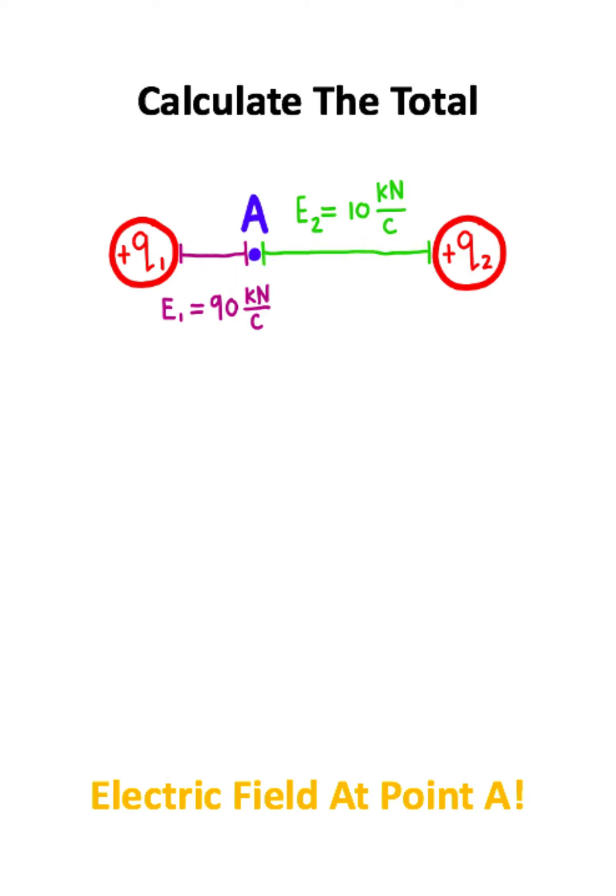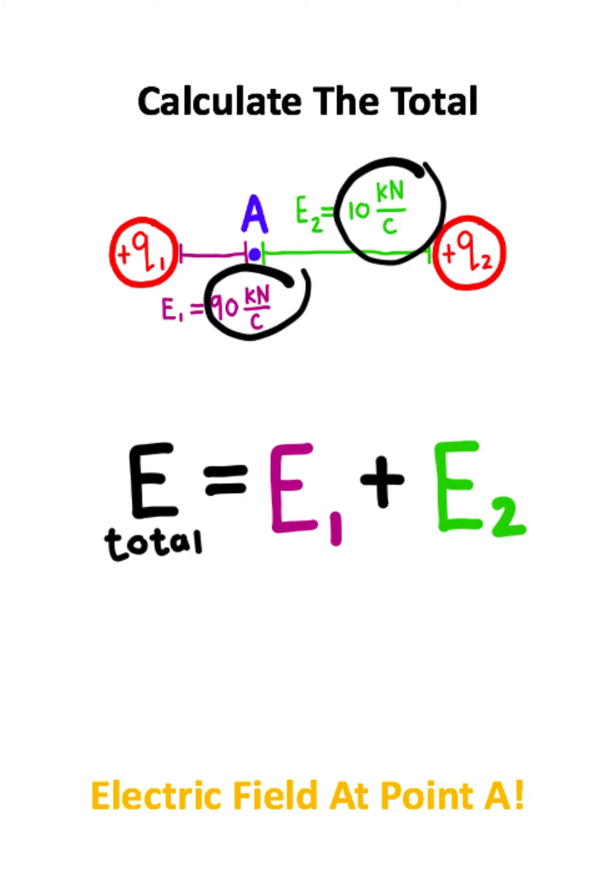All you want to do is add the two electric fields together. But we can't just directly add these numbers because we need to recognize the direction of the electric fields. Positive charges create electric fields that radiate away from the positive charge.